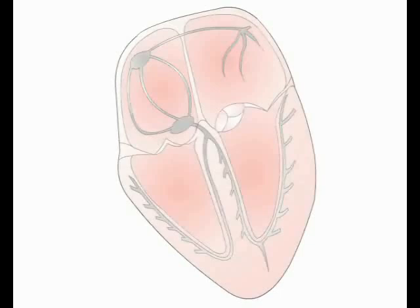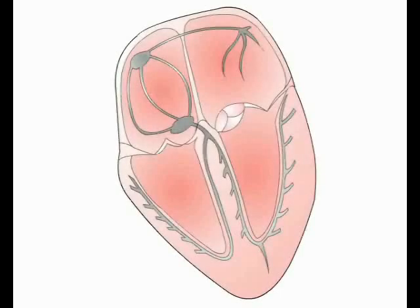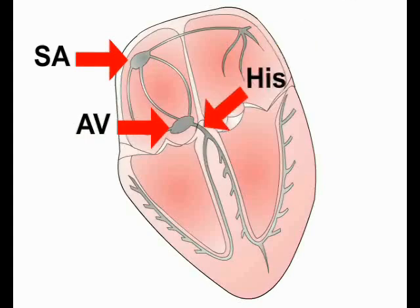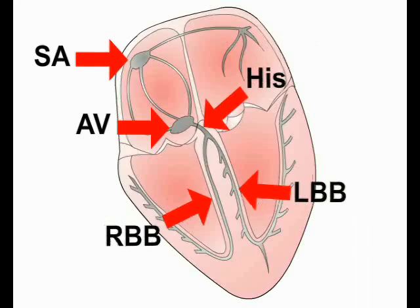The main components of the conducting system are the sinoatrial or SA node situated near the entry of the superior vena cava into the right atrium, and the atrioventricular or AV node leading into the bundle of His, which then divides into the right and left bundle branches in the interventricular septum.